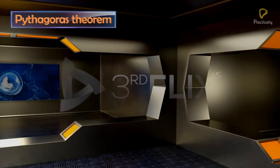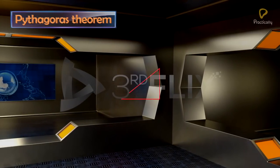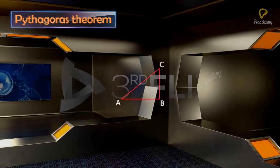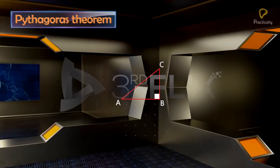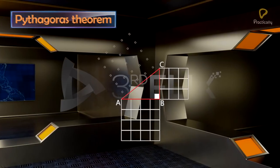Consider a right-angled triangle ABC, right-angled at B. Step 1: Form the squares on sides AB, BC, and AC.